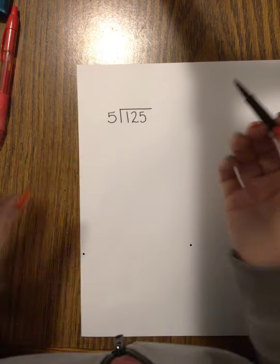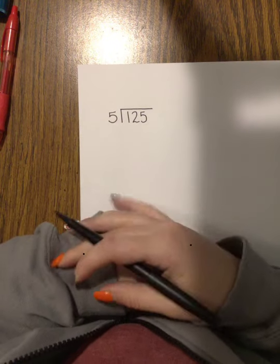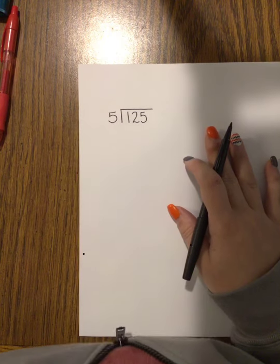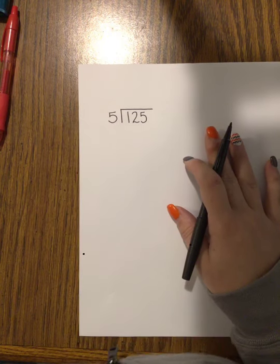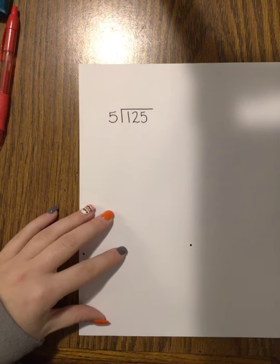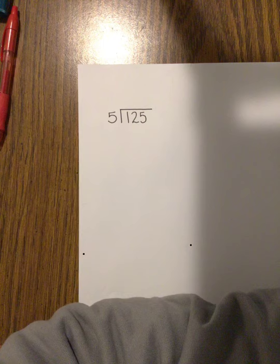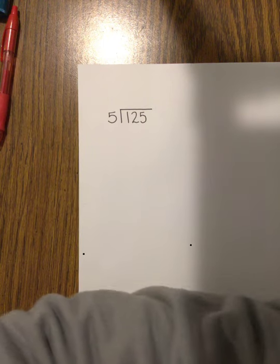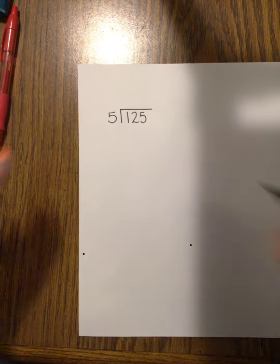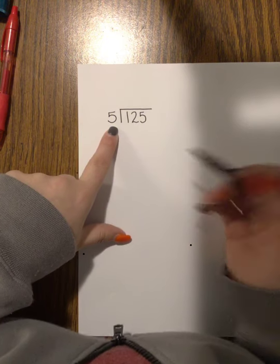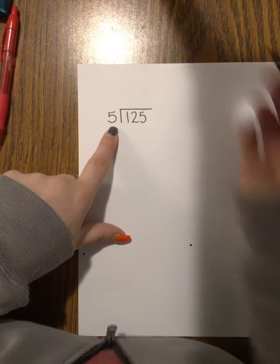Alright, today's lesson 4.8 is all about dividing using partial quotients. This is very similar to lesson 4.7, which was dividing using repeated subtraction. The only thing that's different here is that we realize sometimes it's going to take larger groups of our divisor, so we want to take out big groups.